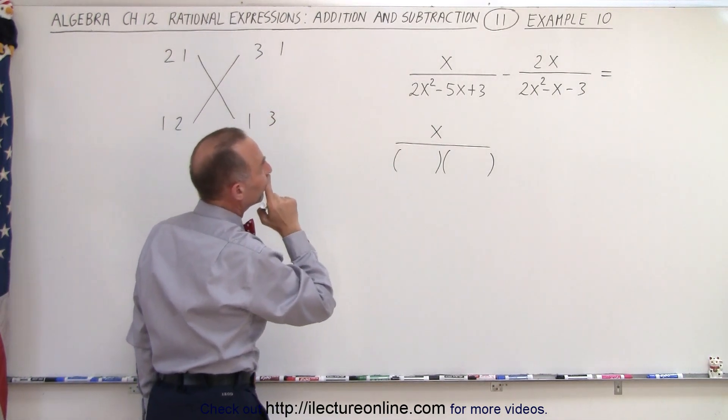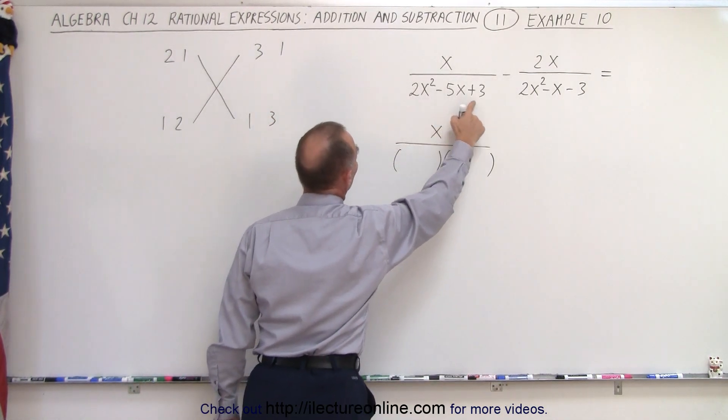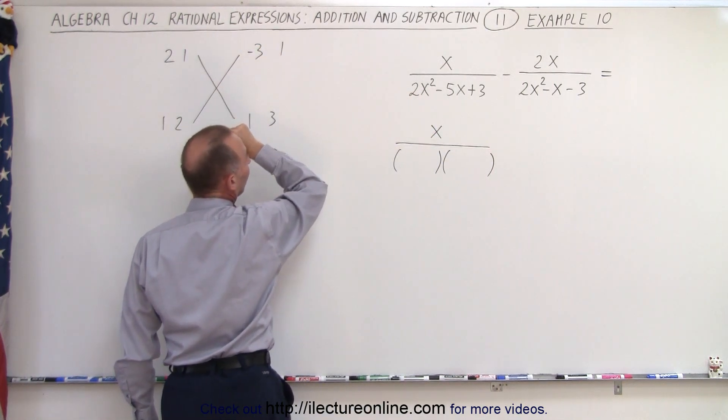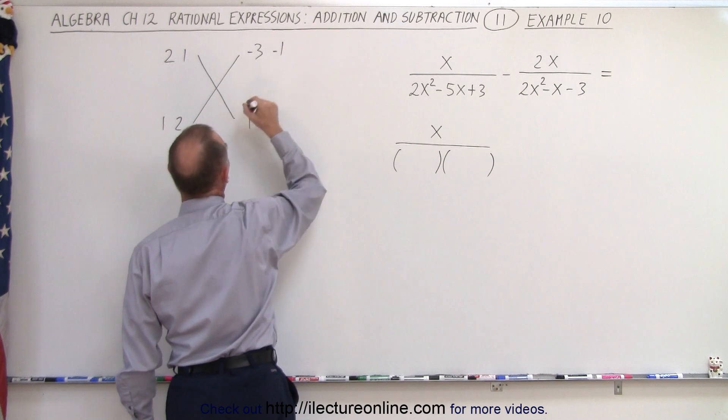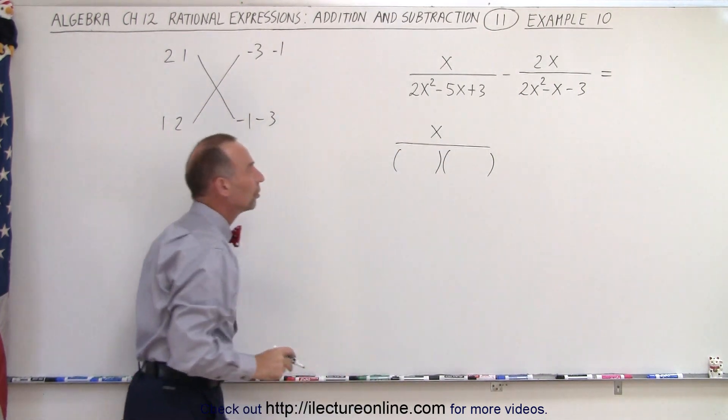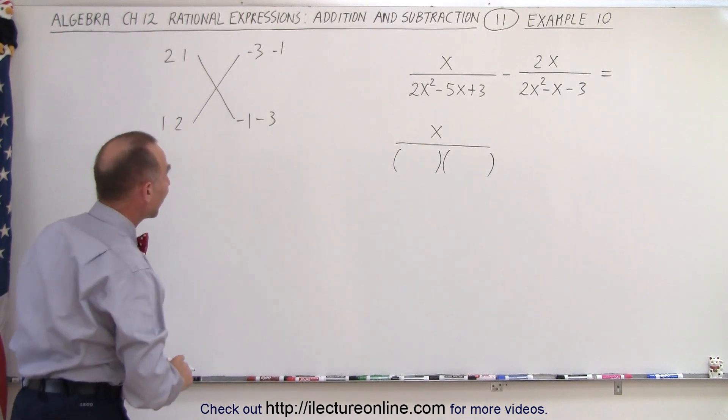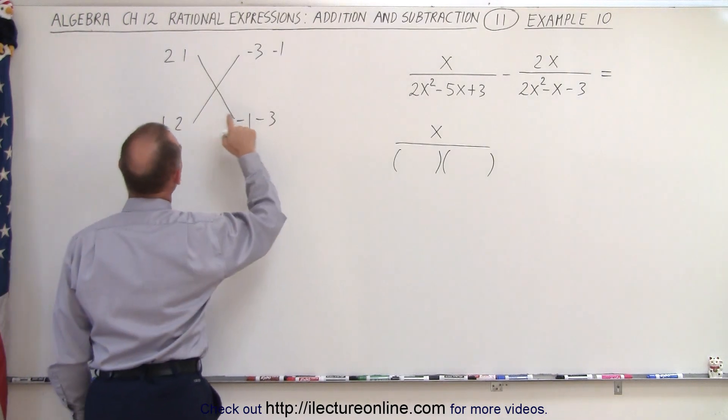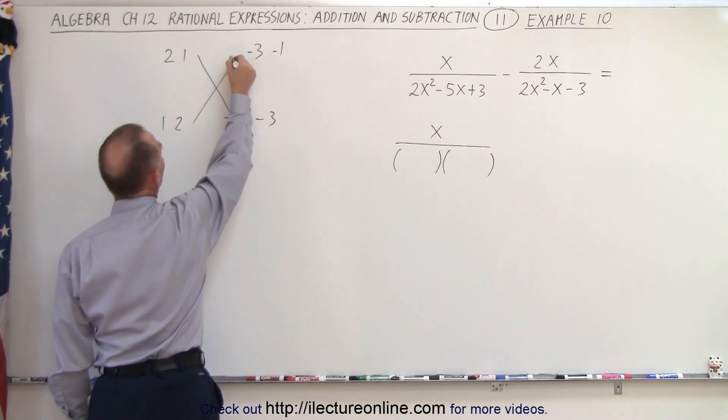Notice, since we have a negative middle term, then we should have negative numbers here. They both need to be negative because when you add them you get a negative in the middle and you have a positive at the end. So when you multiply the two together you get a positive result. To get negative 5, we go across like this.